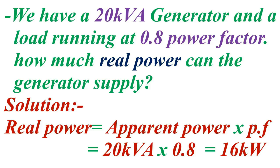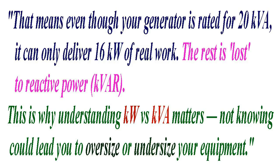Let's look at an example. You have a 20 KVA generator and a load running at 0.8 power factor. How much real power can the generator actually supply? That is 20 KVA multiplied by 0.8 power factor, which equals 16 kilowatts. That means even though your generator is rated for 20 KVA, it can only deliver 16 kilowatts of real work — the rest is lost to reactive power. This is why understanding KW and KVA matters; not knowing could lead you to oversizing or undersizing your equipment.